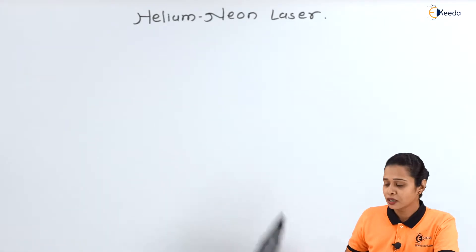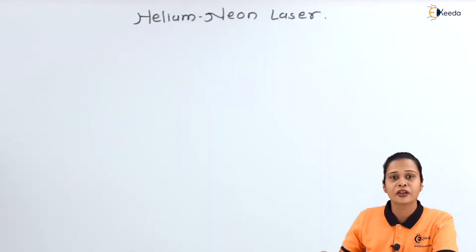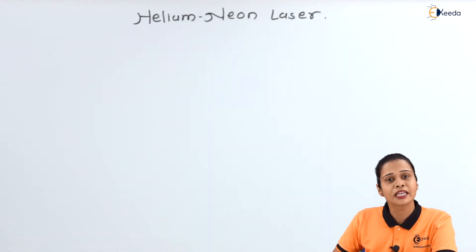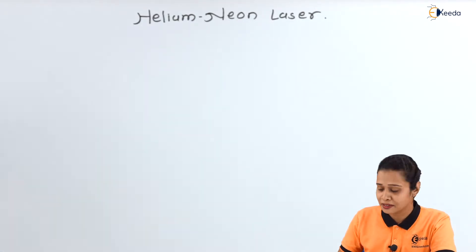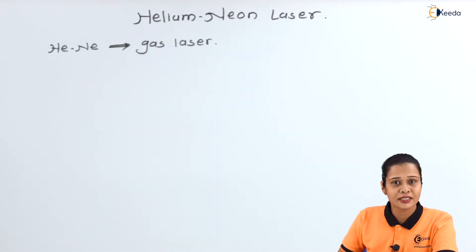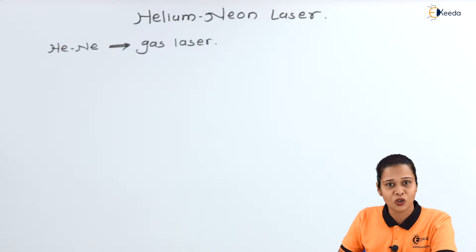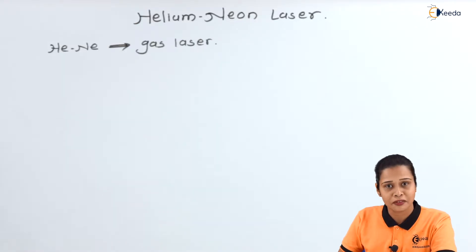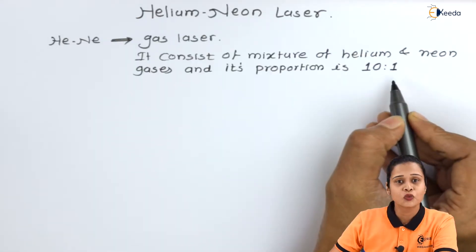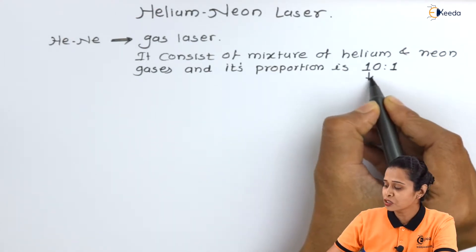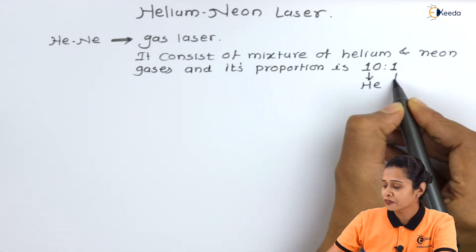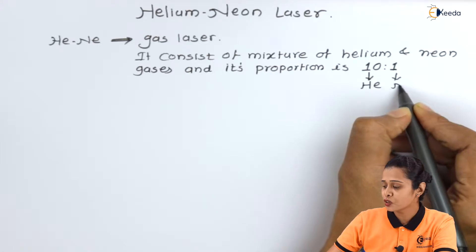First of all, we have Helium and Neon. We know Helium and Neon are gases, that's why it belongs to the category of Gas Laser. It consists of a mixture of Helium and Neon gases and its proportion is 10 to 1, meaning we have 10 times the Helium atoms and 1 times the Neon atoms.